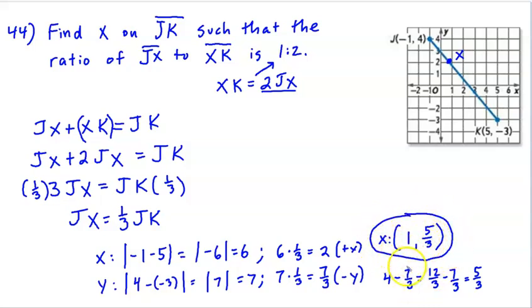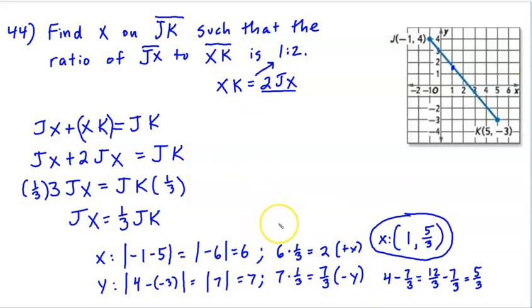As a principle of reasonableness — if you had time on a quiz or test — you should plot that point and see if it looks reasonable. If we plot (1, 5/3), does segment XK look double the size of segment JX? I think it does. That wraps up this homework help video. I hope it helps, but if there's something you're still not understanding or you're not able to do these problems successfully on your own, just let me know. See you next time.